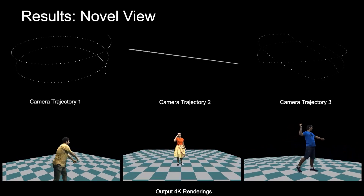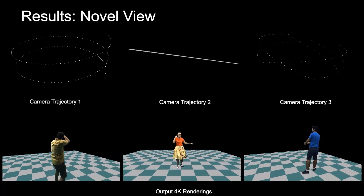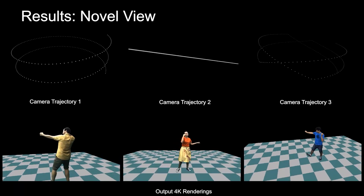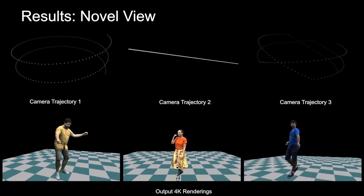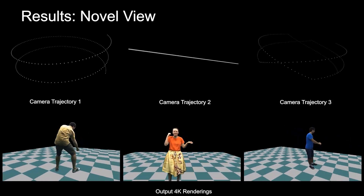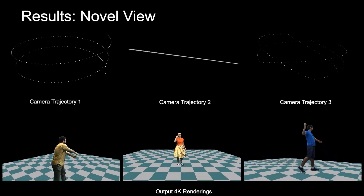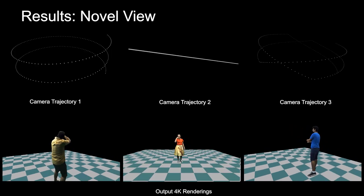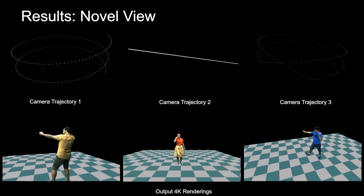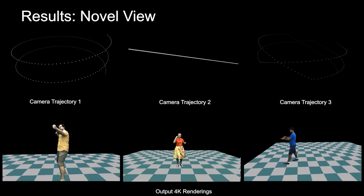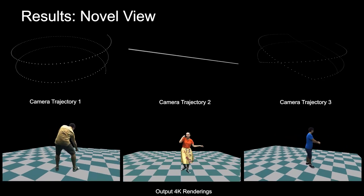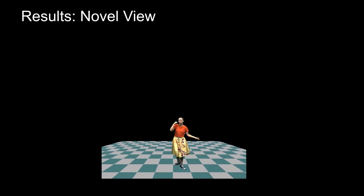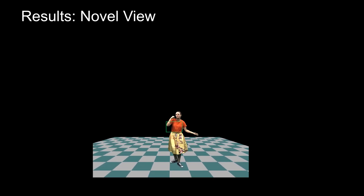We present results in the novel view setting, where the skeleton poses are seen during training. Please note that despite being an animatable method, our approach can also do extremely high-quality novel view synthesis for the training frames. Please observe the effective capture of wrinkles and facial details.